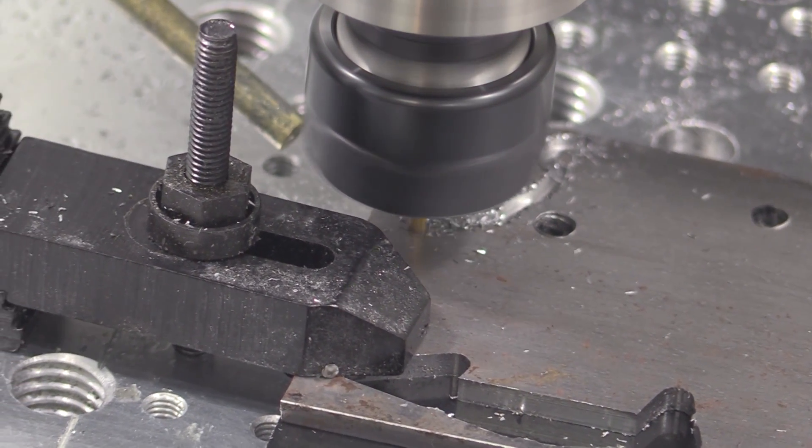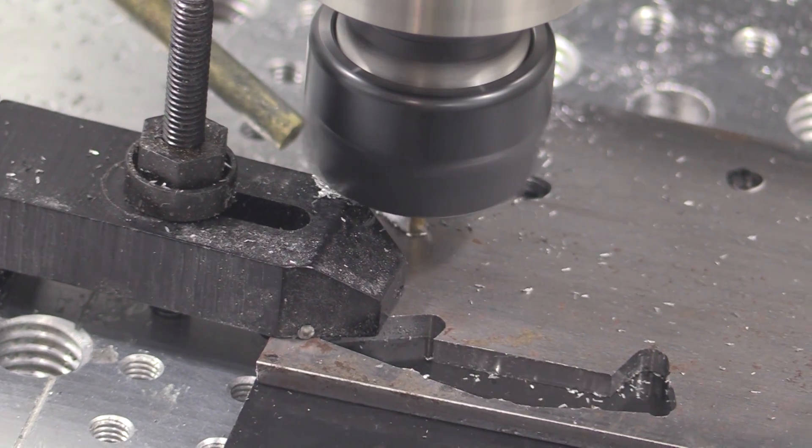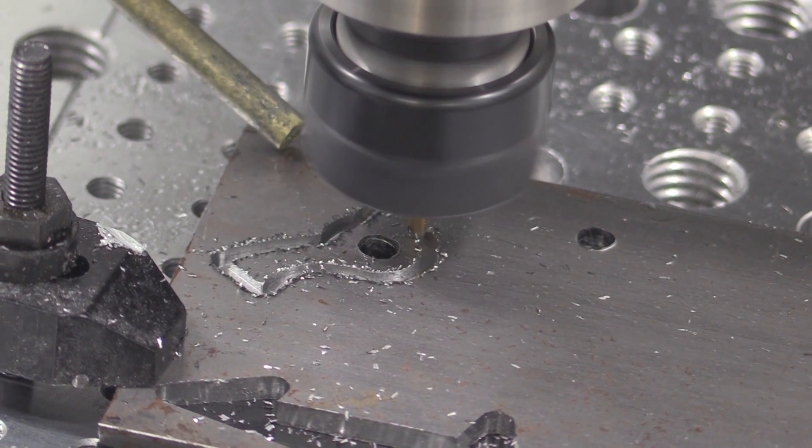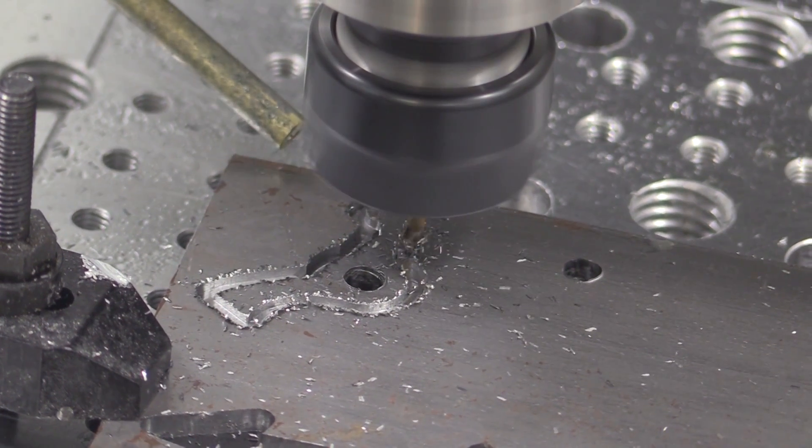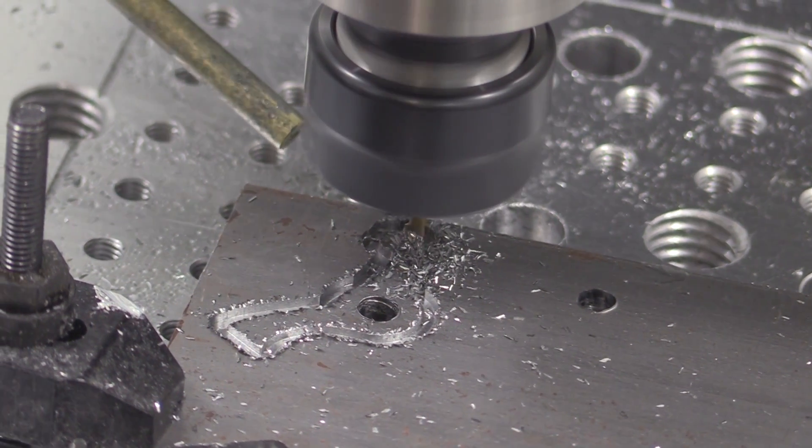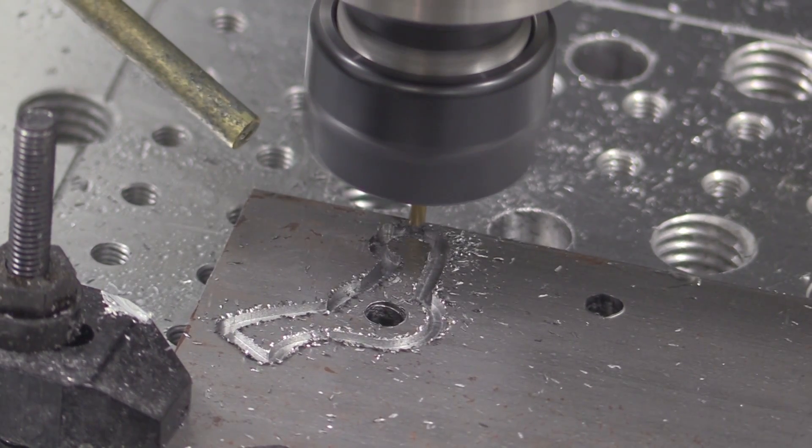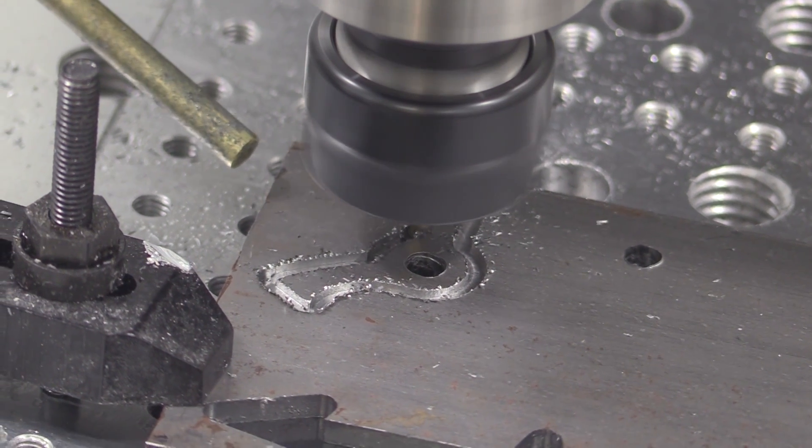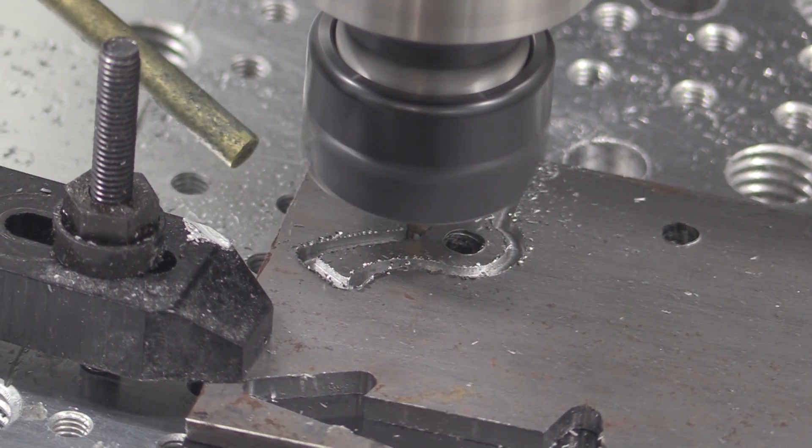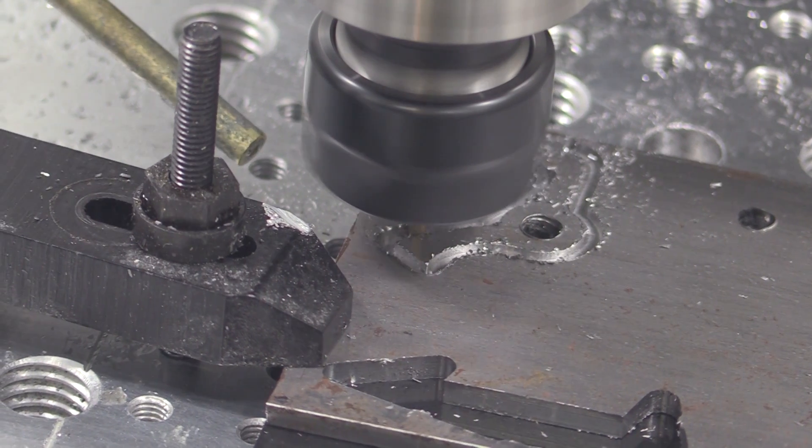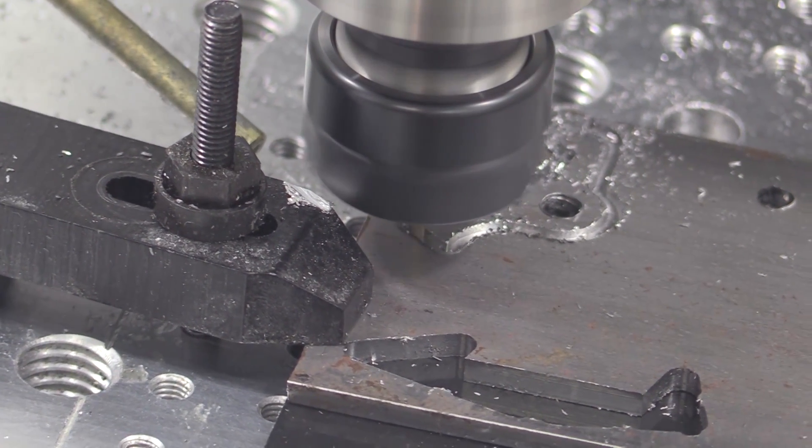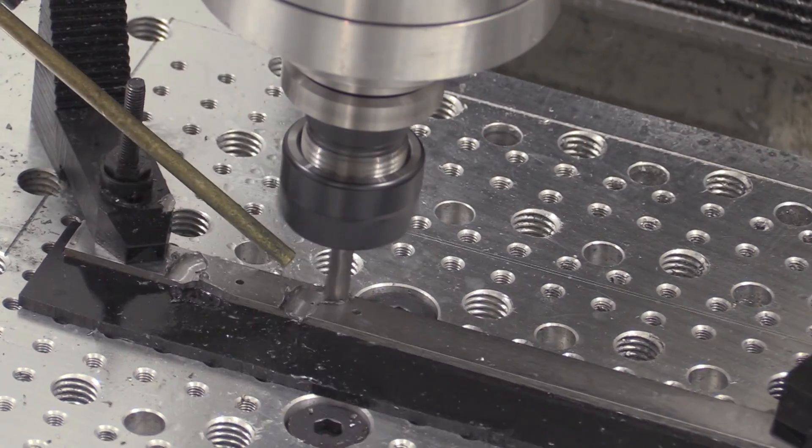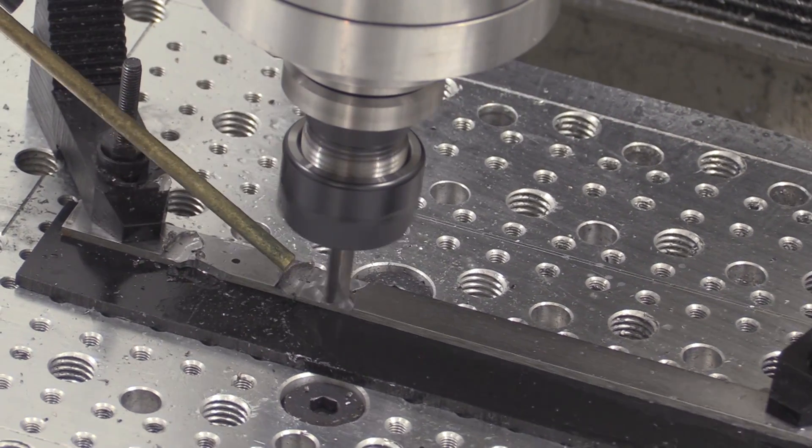These parts could have been cut out on a scroll saw, if I had a scroll saw. But the problem with that is that you have a tremendous amount of finishing work to do when you're done. And what you'll see is using this method, there is still finishing work that needs to be done—filing and sanding—but it's greatly reduced by using CNC to cut this part out.